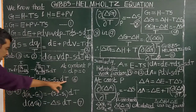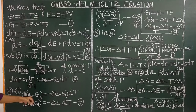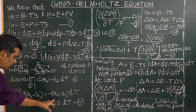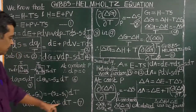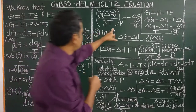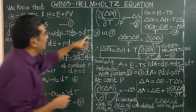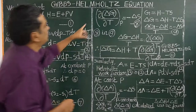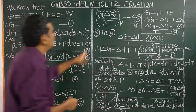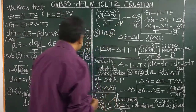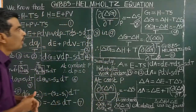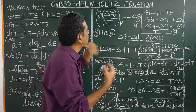Now subtract equation 6 minus equation 5, final minus initial: dG2 minus dG1 equals S2 minus S1 times dT. Therefore, d(delta G) equals minus delta S times dT. Let us call this equation 7. At constant pressure, this can be mathematically written as: the partial derivative of delta G with respect to T at constant pressure equals minus delta S. This is the variation of free energy change of a chemical reaction with respect to temperature.